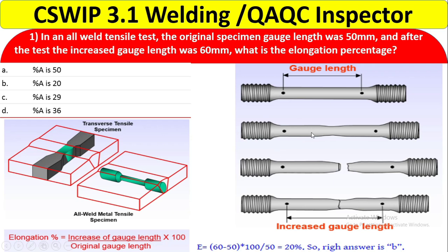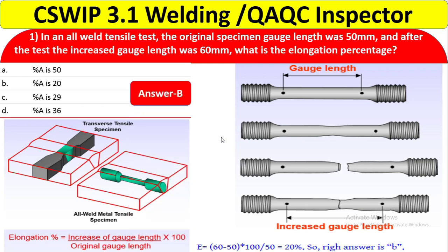The gauge length continuously increases as the tensile test machine applies load. Calculating: E = (60 − 50) / 50 × 100 = 20%. So the right answer is B — the elongation percentage is 20%. You should now understand the answer is B.